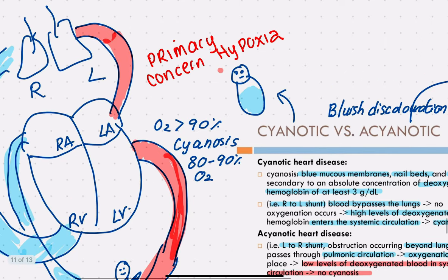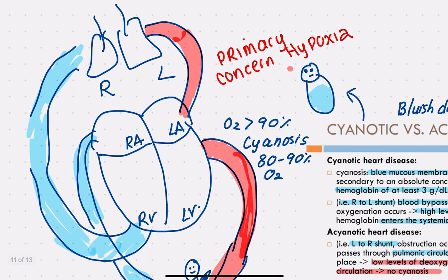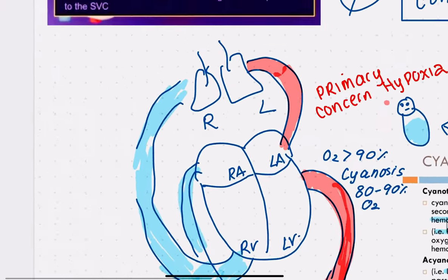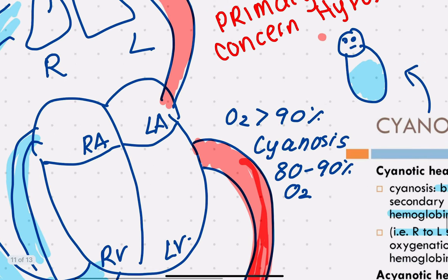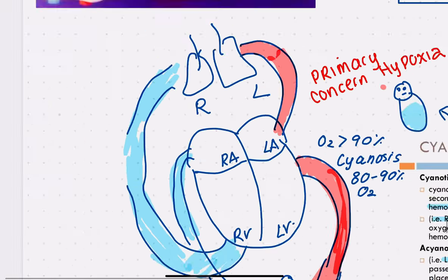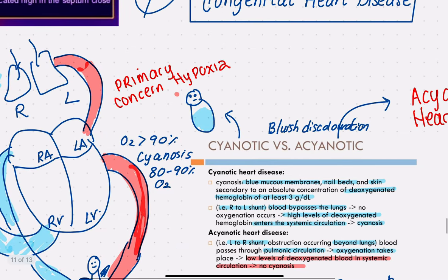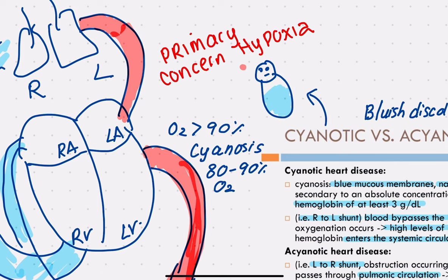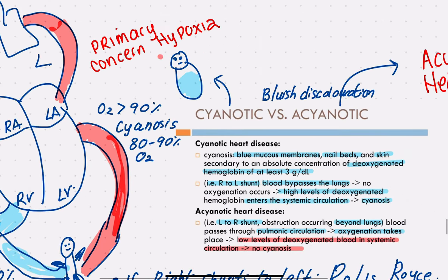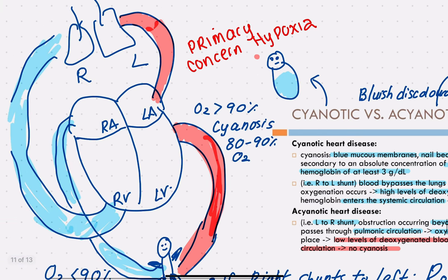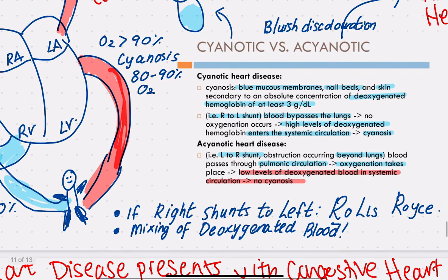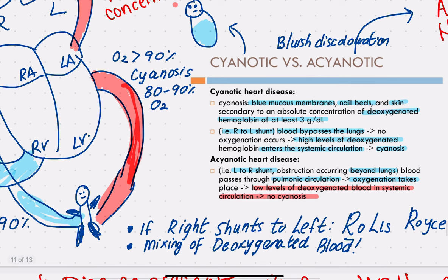A right-to-left shunt means the blood completely bypasses the lungs, resulting in a higher level of blue blood entering the systemic circulation — the blood goes straight from right to left and doesn't pick up any oxygen. In contrast, in a left-to-right shunt, the blood is already oxygenated — it has already gone through the pulmonary circulation — so there is no mixing of blue blood and no cyanosis.